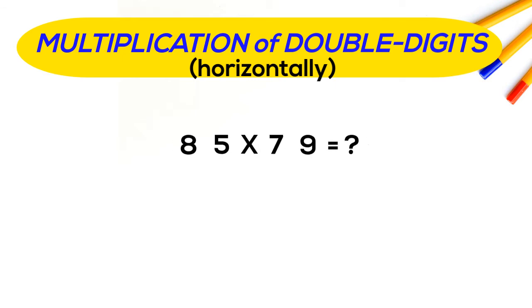Now we will write the place values of each number, then we will put 3 dashes in the next line. First, number of ones place will get multiplied with number of another ones place, so 9 will get multiplied by 5.